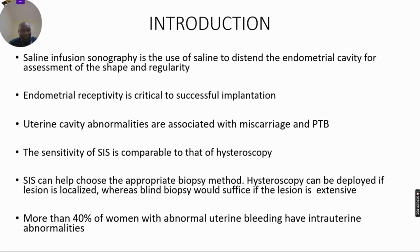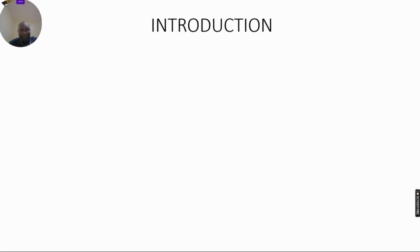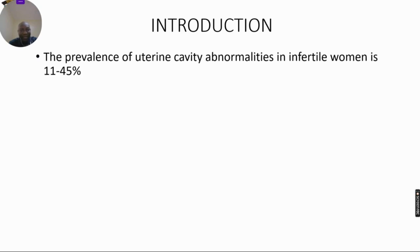More than 40% of women who present with abnormal uterine bleeding have uterine anomalies ranging from polyps, fibroids, adhesions, and congenital uterine anomalies. The prevalence of uterine cavity anomalies in infertile women is between 11 and 45%.